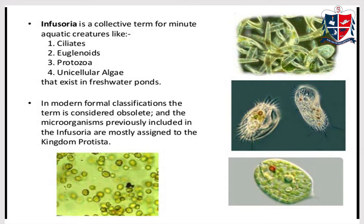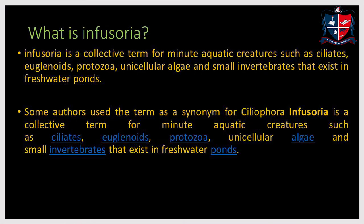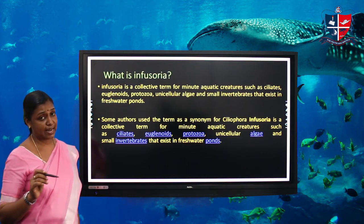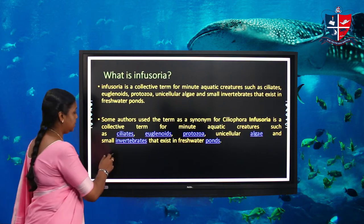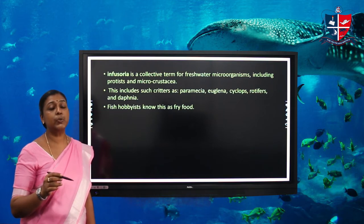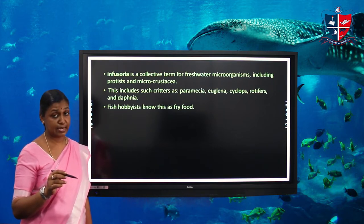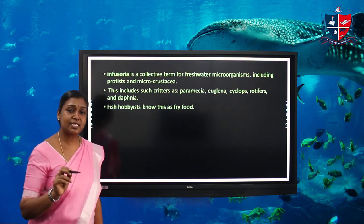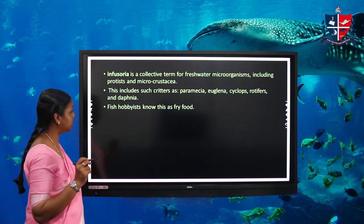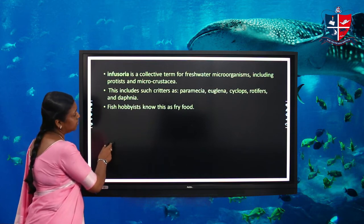Previously, infusoria was assigned to the kingdom Protista. These pictures show infusoria. Infusoria is a group of microorganisms — aquatic creatures used as food. Ciliates, euglenoids, protosoria, and unicellular algae are together known as infusoria. Sometimes small invertebrates are also associated with these unicellular algae and parameceums. Collectively we use the term infusoria.